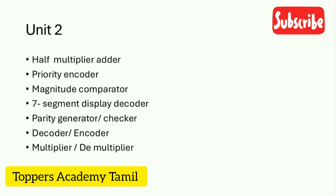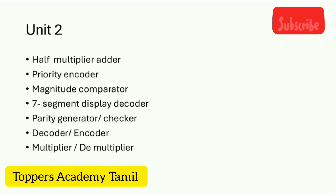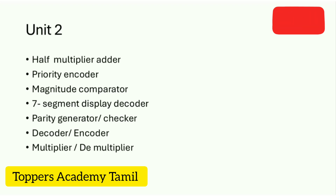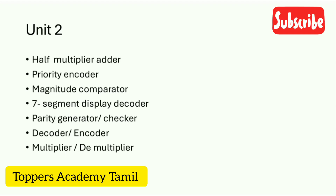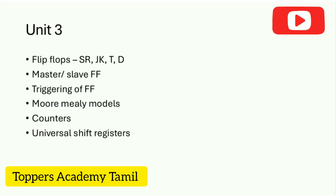Unit 2 is very important. The first question is Half Adder and Full Adder. Next is Priority Encoder, Magnitude Comparator, Seven Segment Display Decoder, Parity Generator Checker, Decoder, Encoder, and then Multiplexer and Demultiplexer.